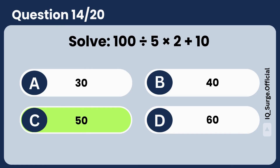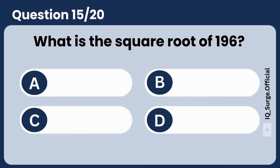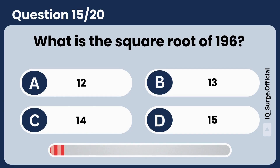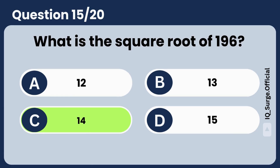What is the square root of 196? Answer: 14. Perfect.